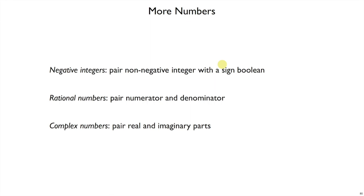There are many other possible encodings of numbers. We could add rational numbers on top of that by pairing a numerator and denominator integer. We could build complex numbers on top of that by pairing rational numbers for the real and imaginary parts.